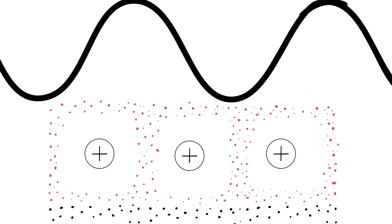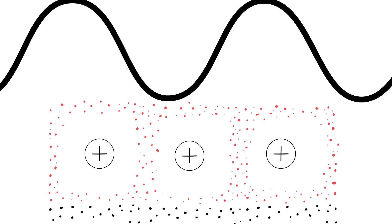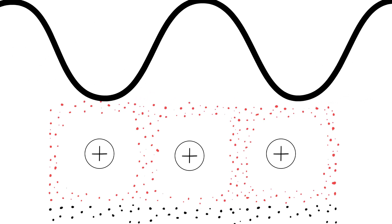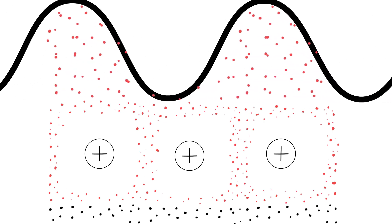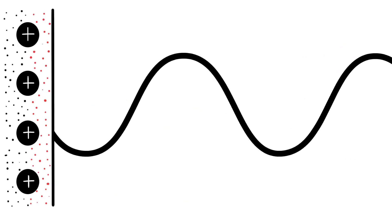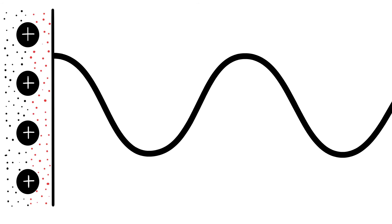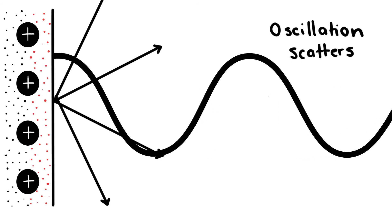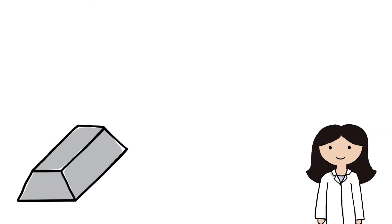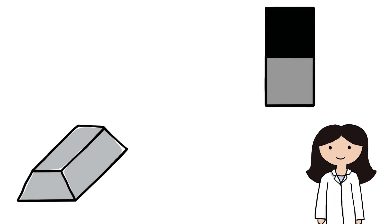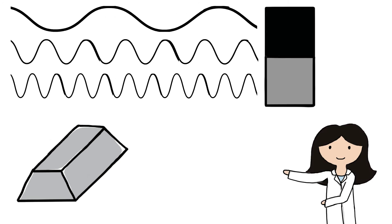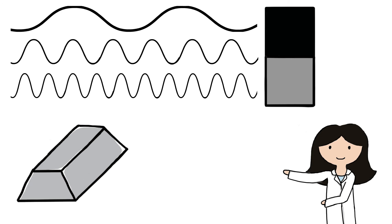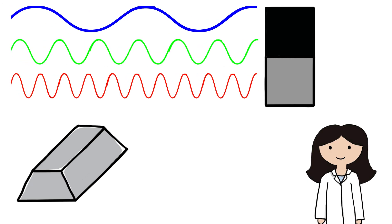When light is shone on a bulk metal, the surface plasma oscillates in phase with the light, and since oscillating electrons generate new light, our incident light is scattered in all directions. This is why metals are reflective. Since there is a continuous band of energy levels, the surface plasma can oscillate in phase with any wavelength of light, and so all colors are reflected.